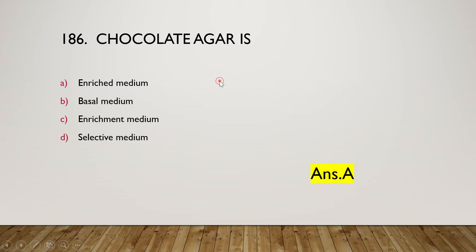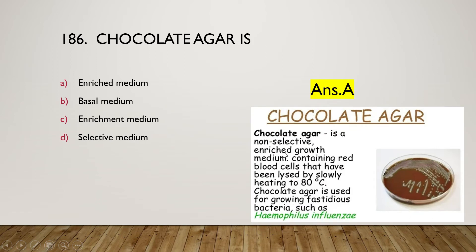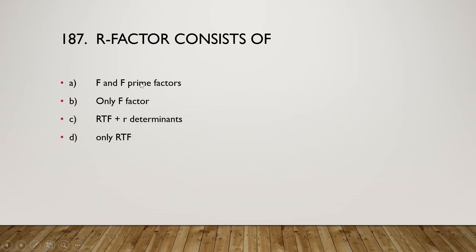The next question: chocolate agar is an enriched medium, basal medium, enrichment medium, or selective medium? The right answer is option A, enriched medium. Chocolate agar is a non-selective enriched growth medium containing red blood cells that have been lysed by slowly heating to 80°C. It is used for growing fastidious bacteria such as Haemophilus influenzae. Blood is added as an enriched nutrient.